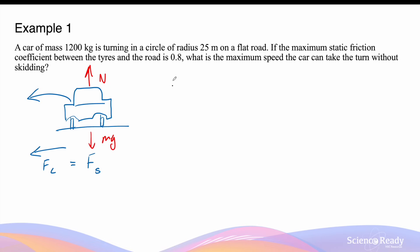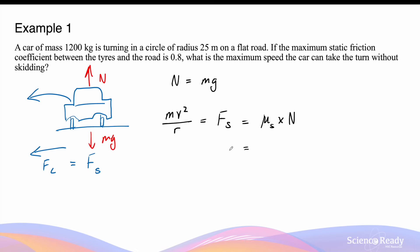From the diagram we can form two mathematical equations. In the vertical component: the normal force equals the downward weight force. In the horizontal component: the centripetal force, given by mv² over r, equals the static friction, which is the coefficient of static friction multiplied by the normal force. We can modify this to mv² over r equals the coefficient multiplied by mg, since the normal force equals the weight force.